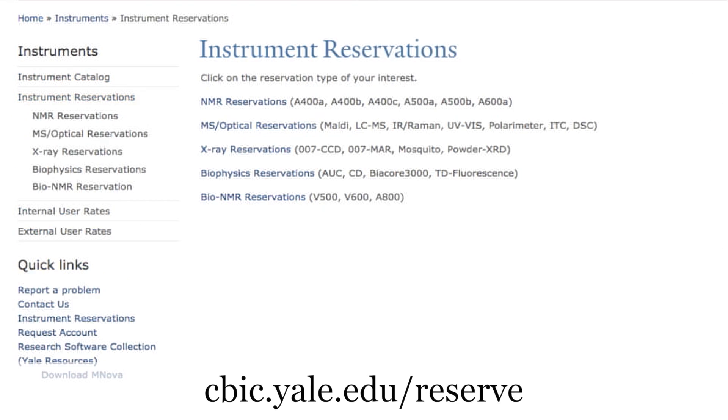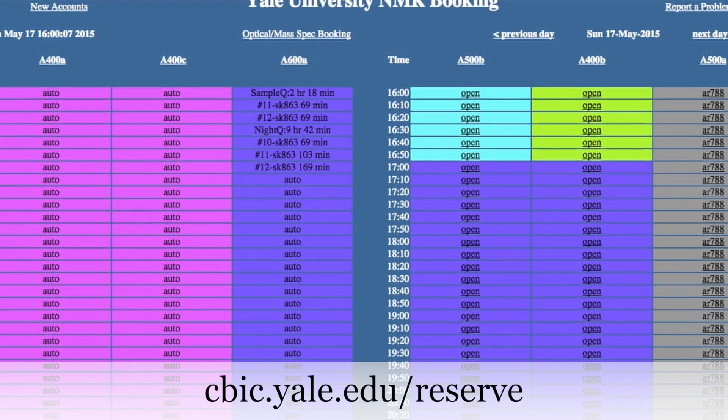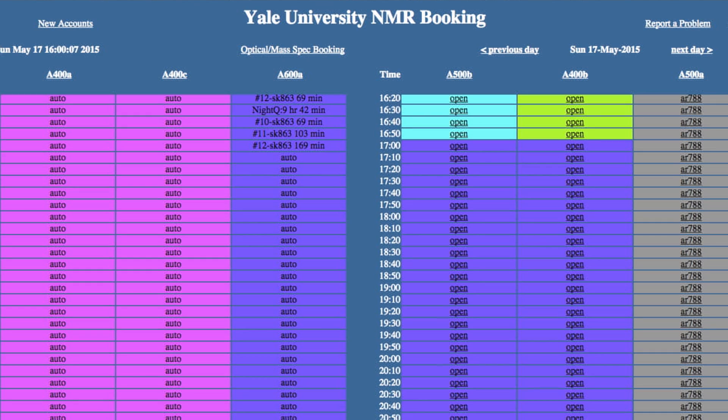Now that you've got your CBIC account, you're free to use any of the instruments for which you've been trained 24 hours a day every day of the year. However, most of the instruments require reservations prior to use which are available via our online reservation app at cbic.yale.edu/reserve. A link is given in the description for this video.